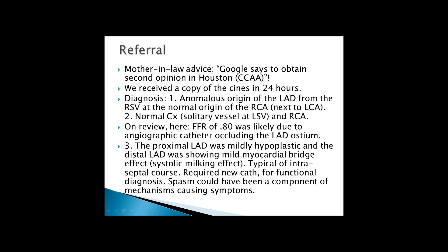The patient was referred to Stanford's pediatric department, which has rich experience with unroofing of anomalous arteries with intramural course. They agreed there was a course between aorta and pulmonary artery and scheduled the patient for surgery. At that point, the mother-in-law used the internet and found we should have an opinion in Houston. We reviewed the movies in 24 hours and concluded this was an anomalous origin of the left anterior descending from the right. We thought the FFR was probably decreased due to the guiding catheter positioned obstructively at the ostium — that could have been spasm.